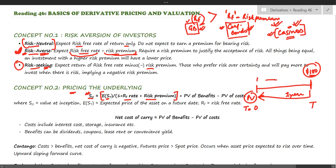If it is a bond, we are going to receive interest during the term of the contract, so there will be benefits arising before expiry. If it is equity, there can be dividends; if it is real estate, there can be lease rentals. Similarly, there can be costs — if it is a commodity, there can be storage costs, interest costs, and insurance costs. So if we are going to receive something in the future, the present value of such benefits increases the price of the security. Higher benefits mean higher price; higher costs mean lower price.